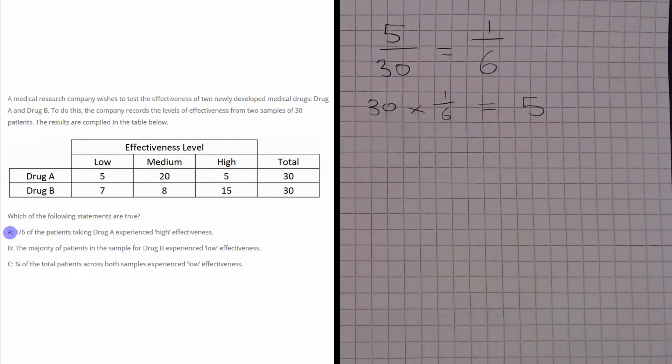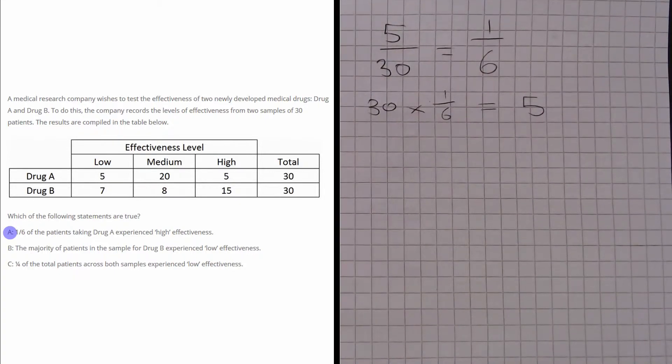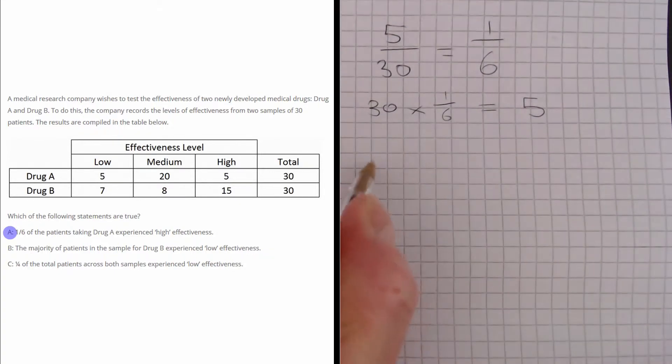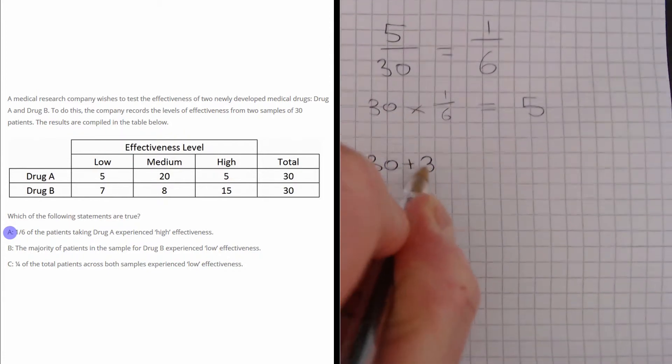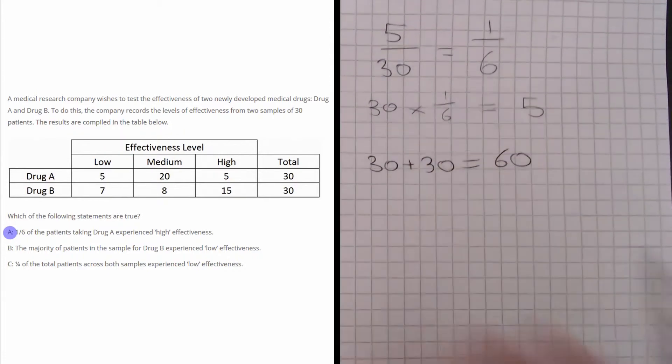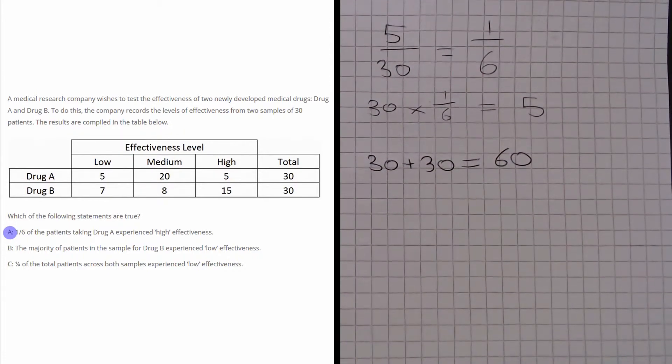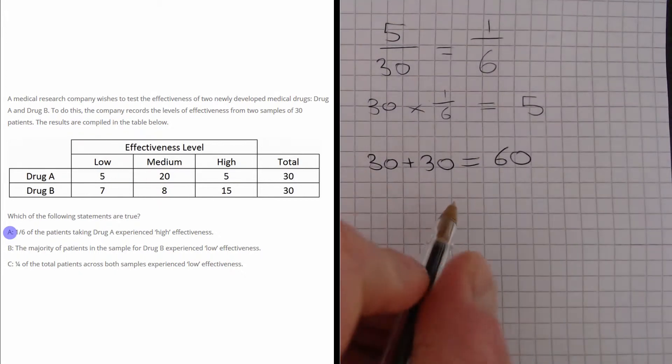Finally, let's have a look at Part C. Part C says that a quarter of the total patients across both samples experienced low effectiveness. Across both samples, we have 30 plus 30, which is 60 people, and a quarter of 60 is 15.